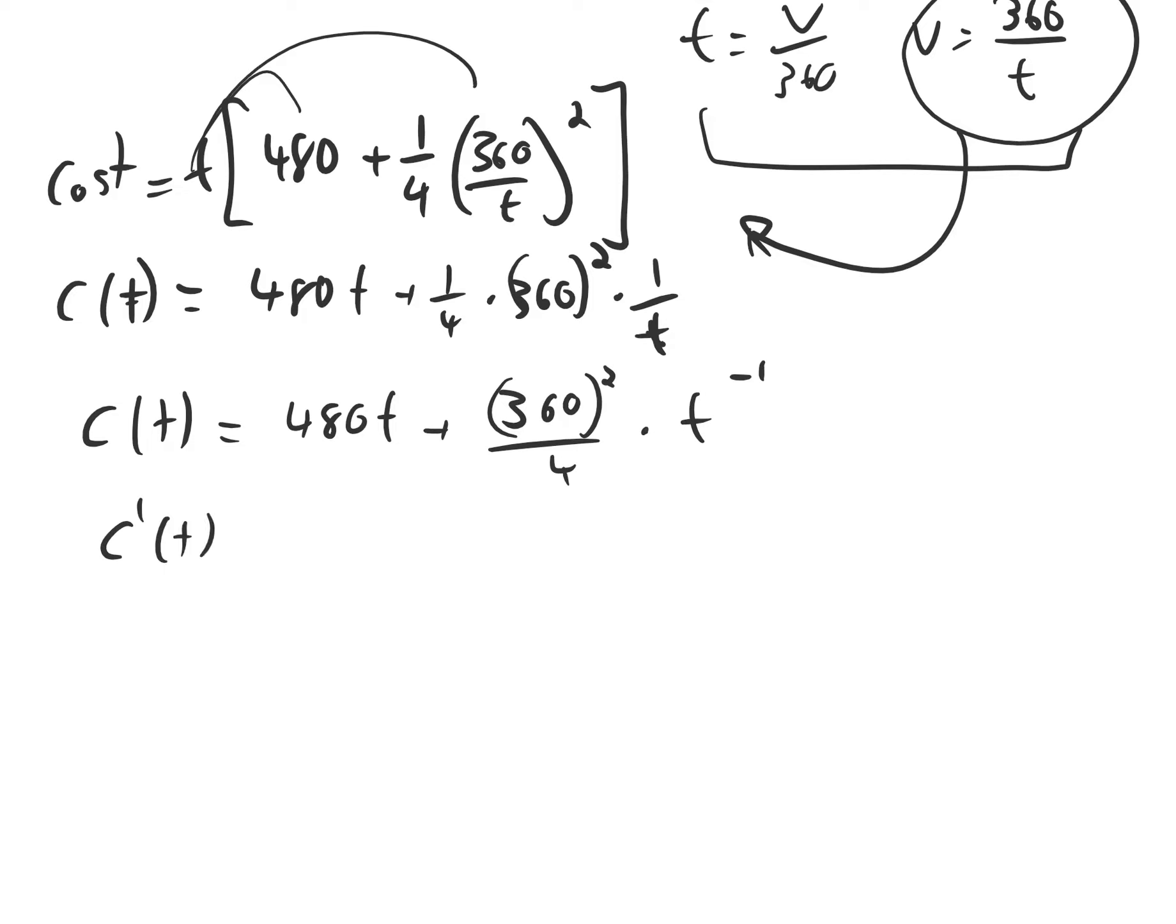So then c prime of t will be 480. Then we have this constant, minus sign comes down, times t to the negative 2. So c prime of t equals 480 minus 360 squared over 4 times 1 over t squared.